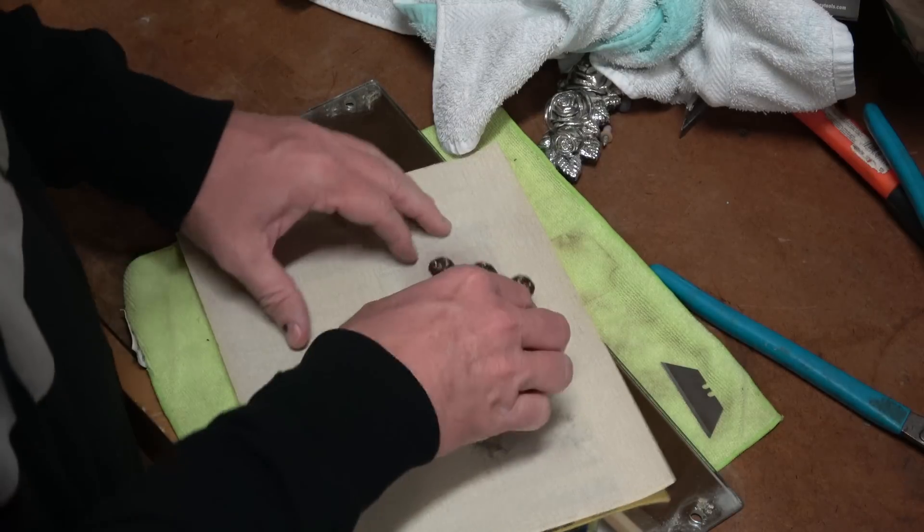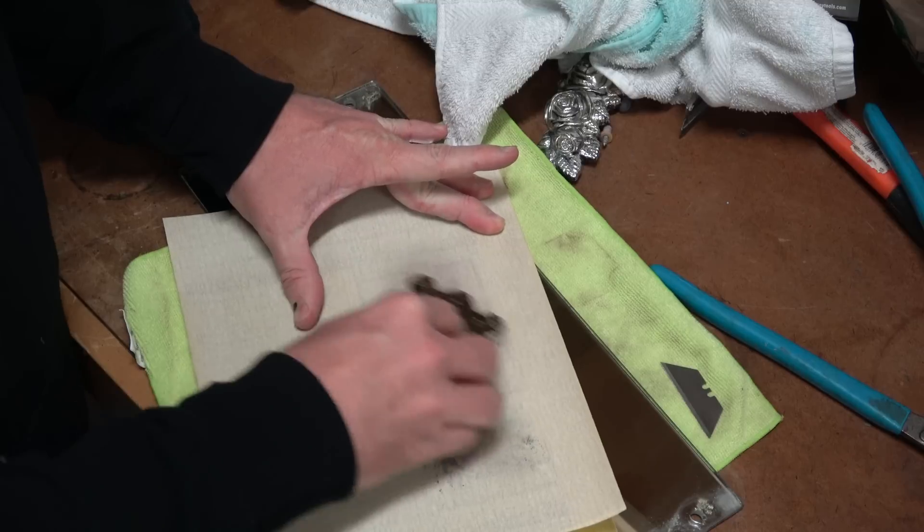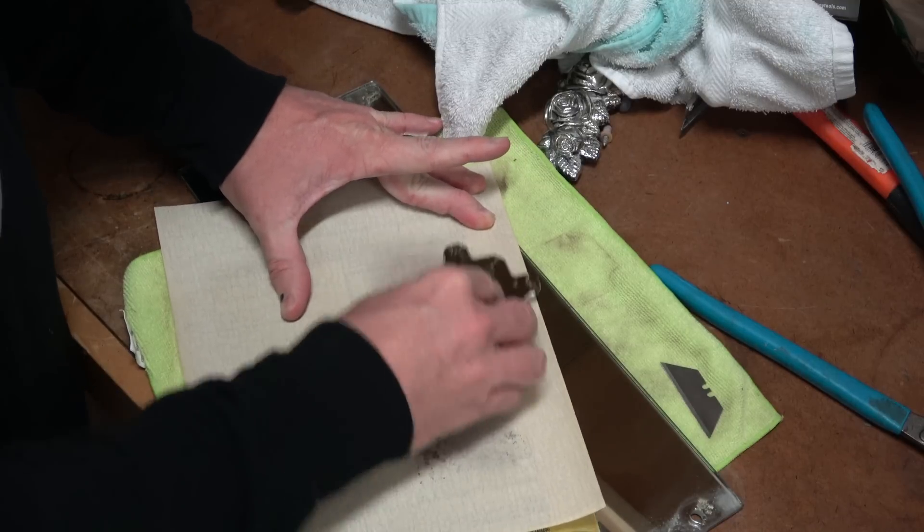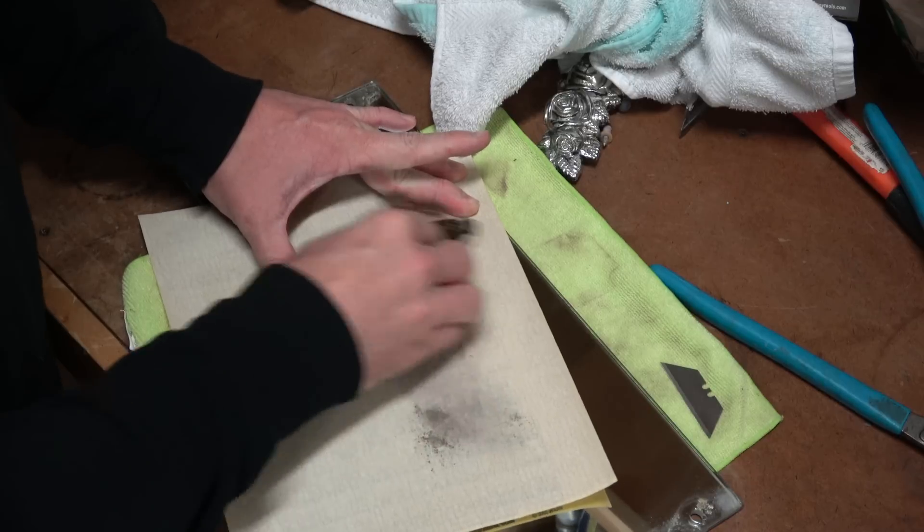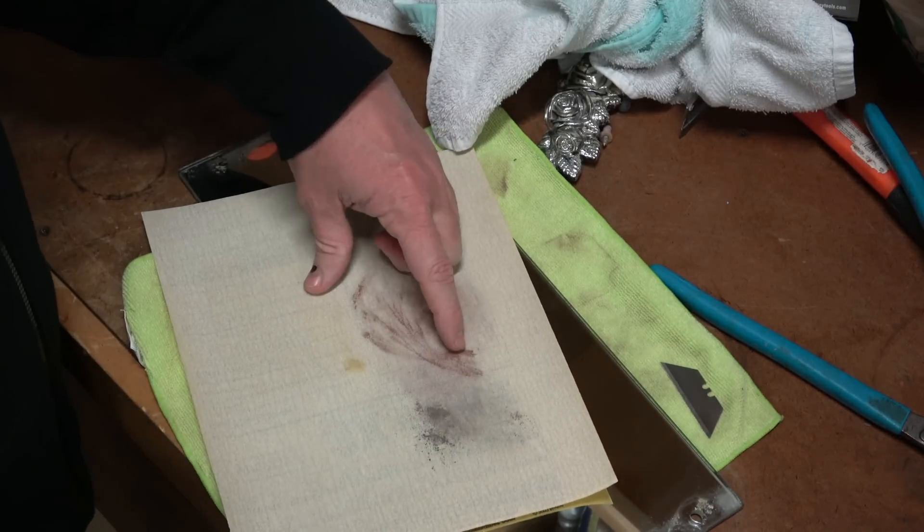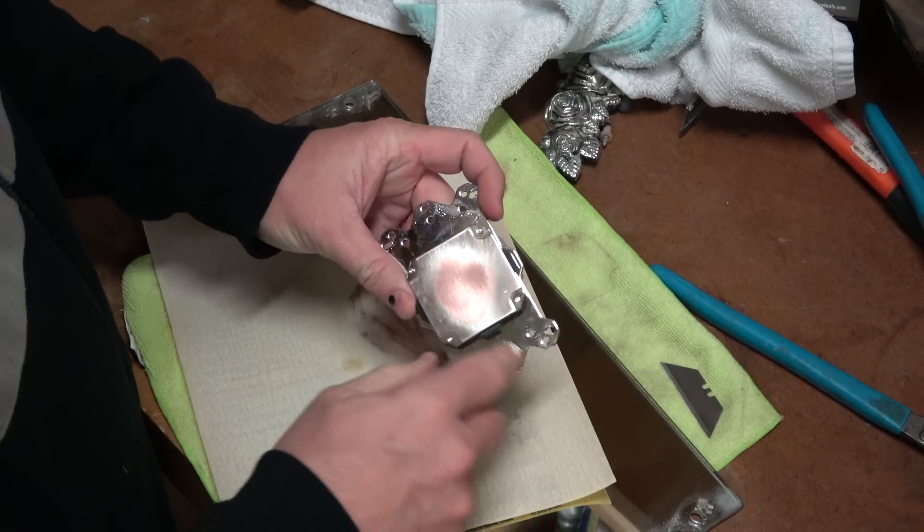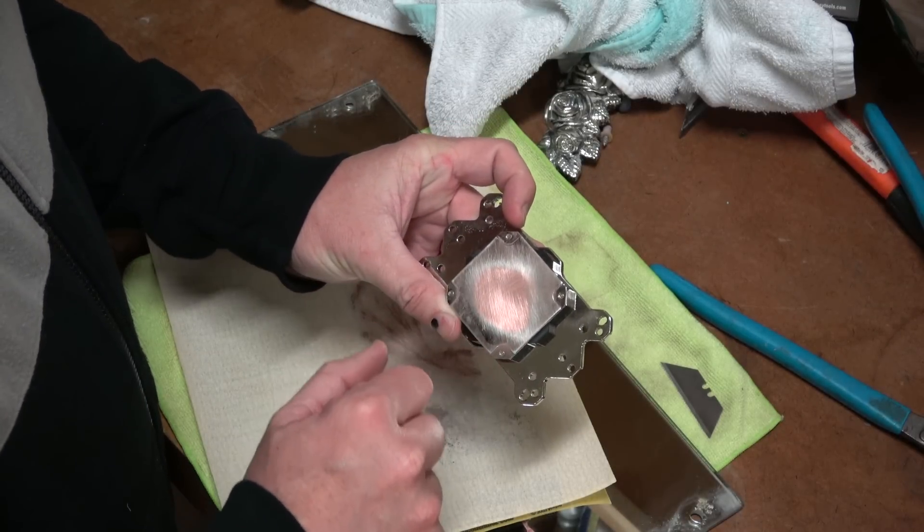As we started doing it, we're going to lay the block down and start going in a nice circular motion. And you can see how that copper starts coming off and we got a circular pattern there in the middle of the block.